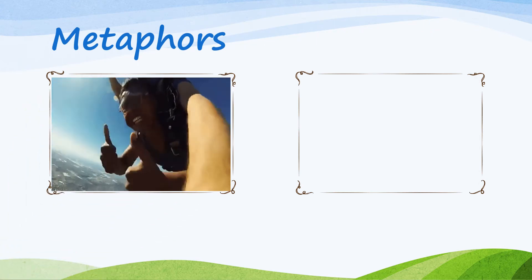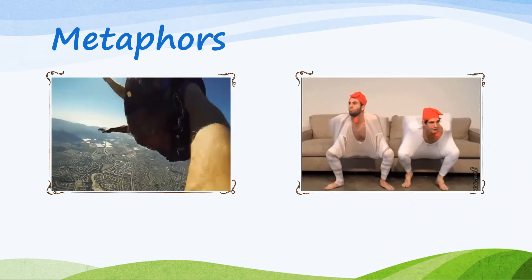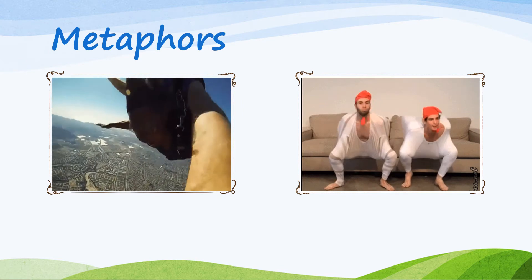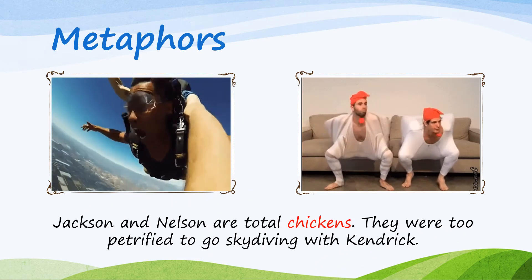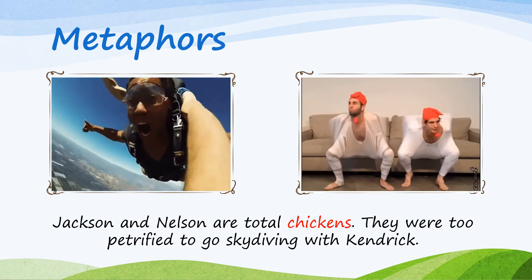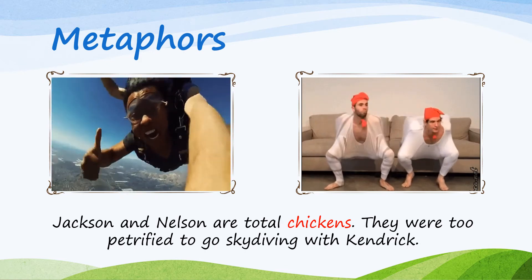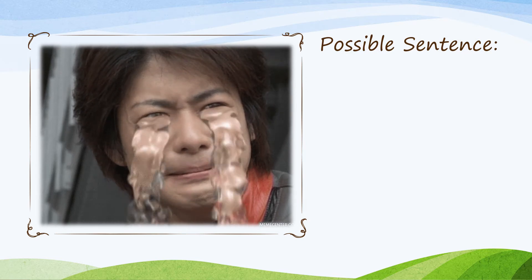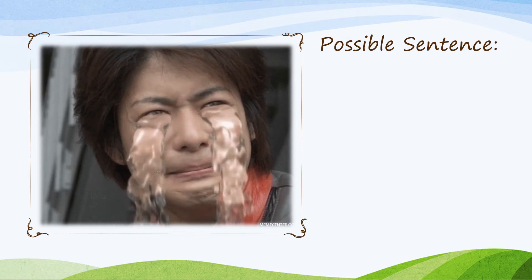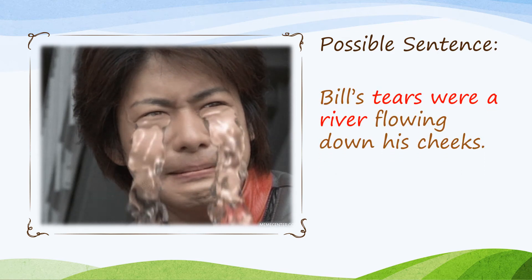Kendrick is skydiving, but his friends Nelson and Jackson planned to go skydiving but they were petrified. The average writer may say that these guys are scary. However, the creative writer would say Jackson and Nelson are total chickens — they were too petrified to go skydiving with Kendrick. Now it's your turn. Create a sentence using a metaphor to describe Bill's crying. Pause the video and write your sentence now. Remember to press play when you're done. Here's a possible sentence to describe Bill: Bill's tears were a river flowing down his cheeks. Here, Bill's tears are being referred to as a river.